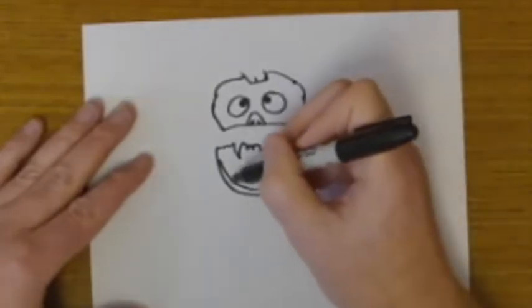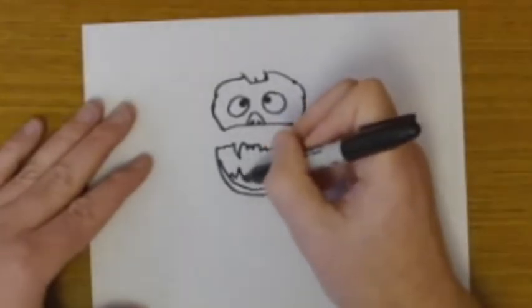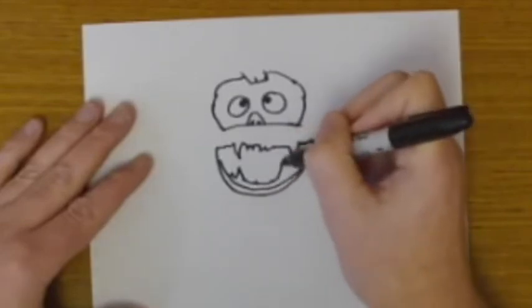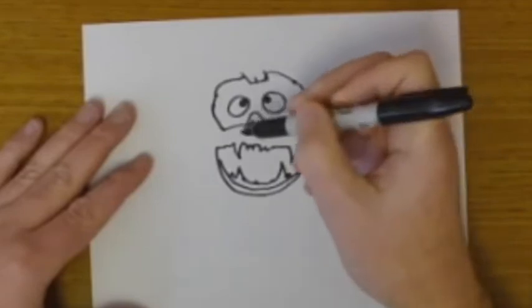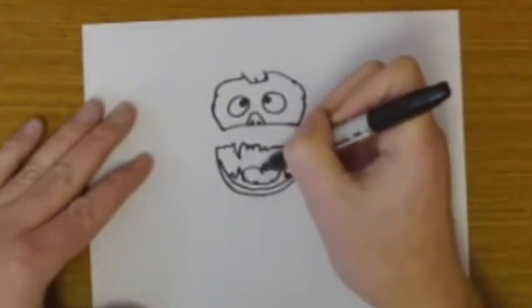And then on top of that, a couple of fangs, more teeth coming up from the bottom. And then we're going to finish off with the tongue, which is just a curved shape, and then another one.